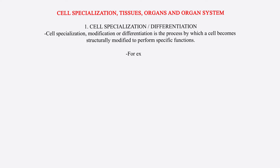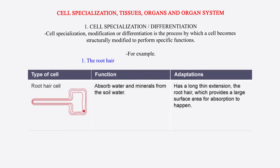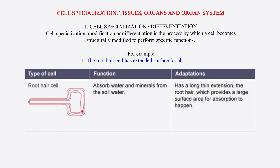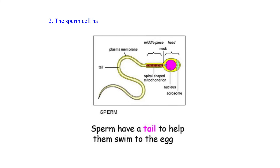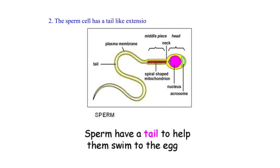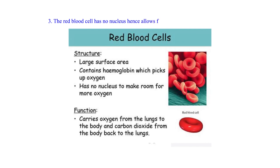For example: one, the root hair cell has an extended surface for absorption. Two, the sperm cell has a tail-like extension for swimming towards the ovum. Three, the red blood cell has no nucleus, hence allowing for packaging of more hemoglobin, so more oxygen is transported.